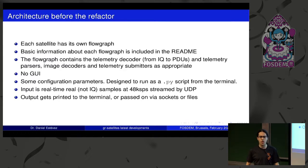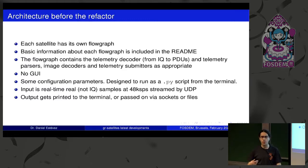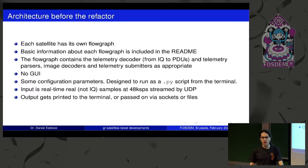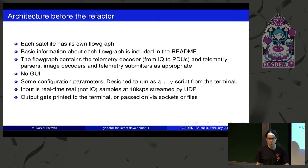The flow graph contains all the things you need to turn IQ data into useful data — blocks to demodulate the data, to run forward error correction, to parse the telemetry into useful values, and also an image decoder for satellites which transmit JPEG data in small chunks. There's no GUI. The flow graphs have some configuration parameters, so the idea is you should run this as a .py script generated from GRC from the terminal, where you can pass command line parameters.